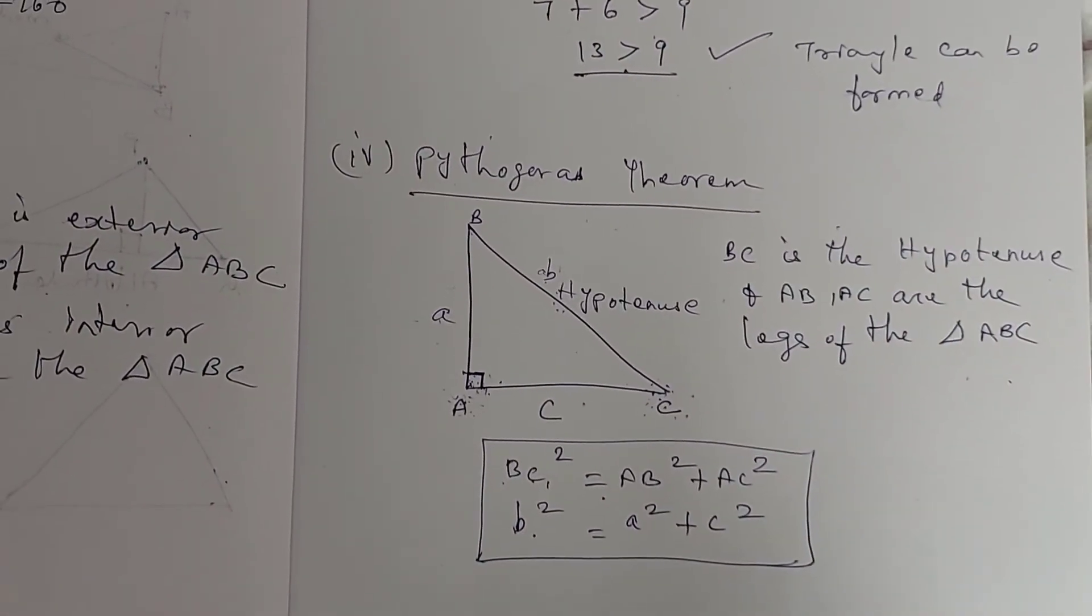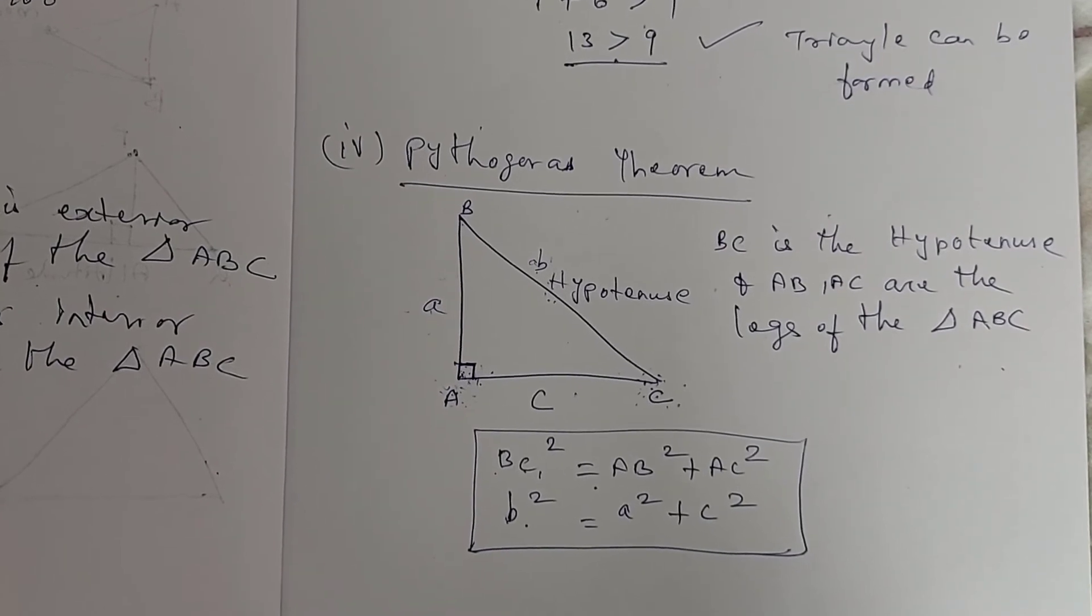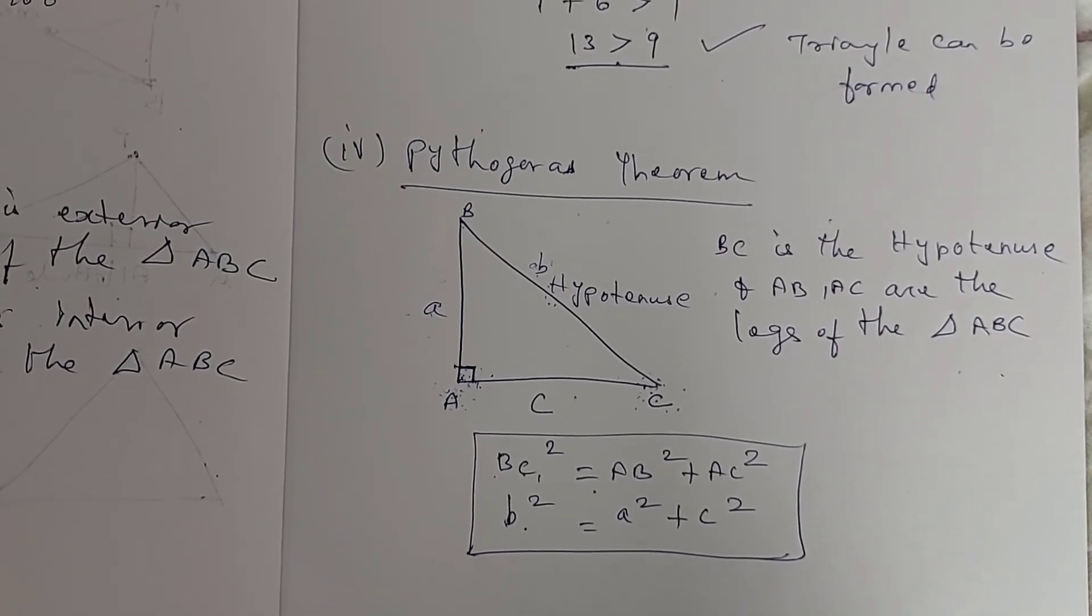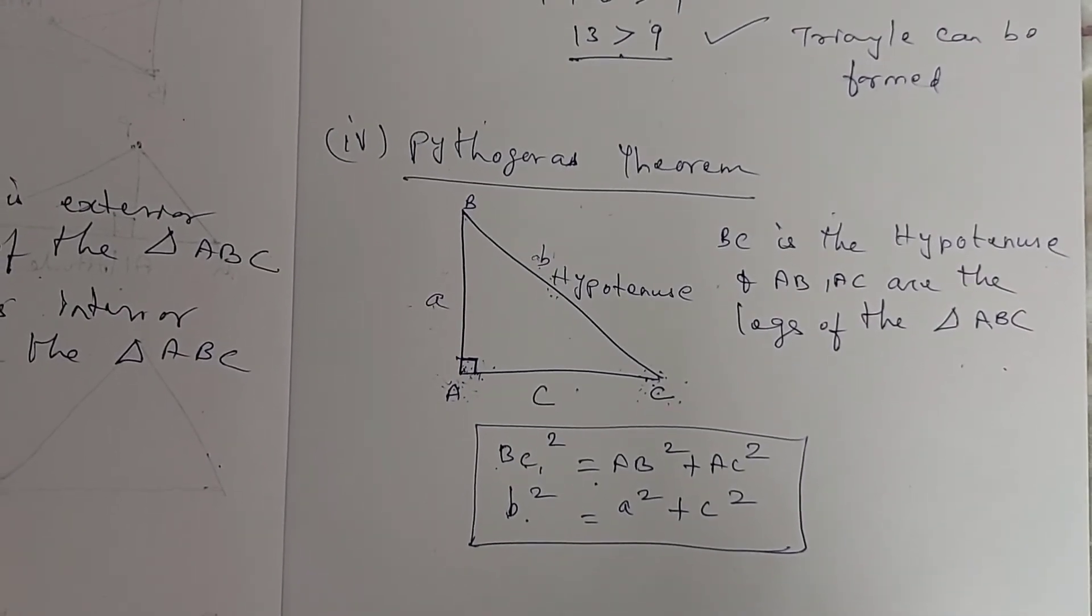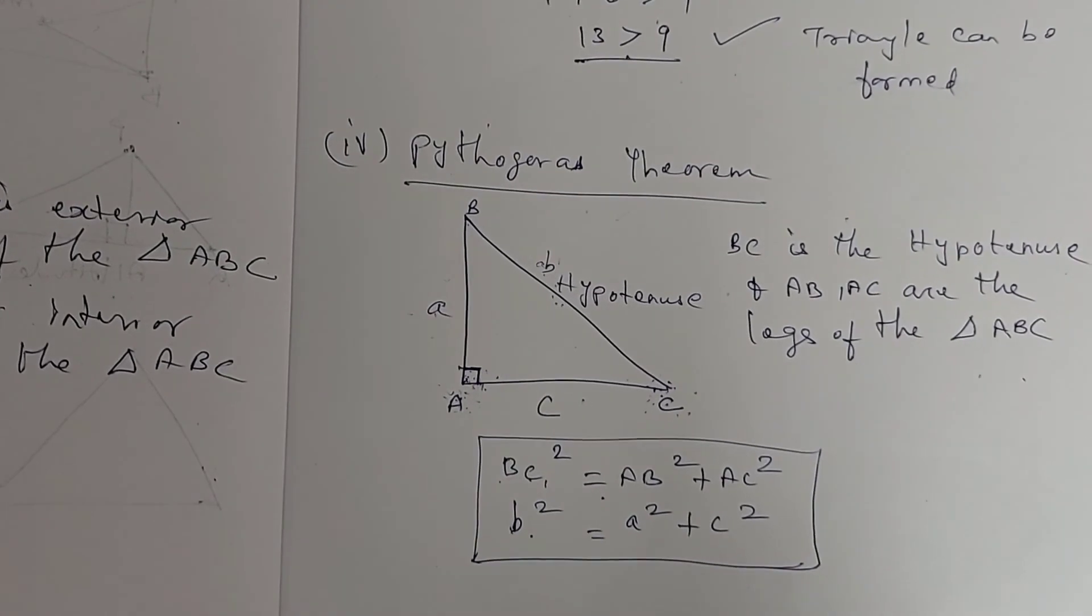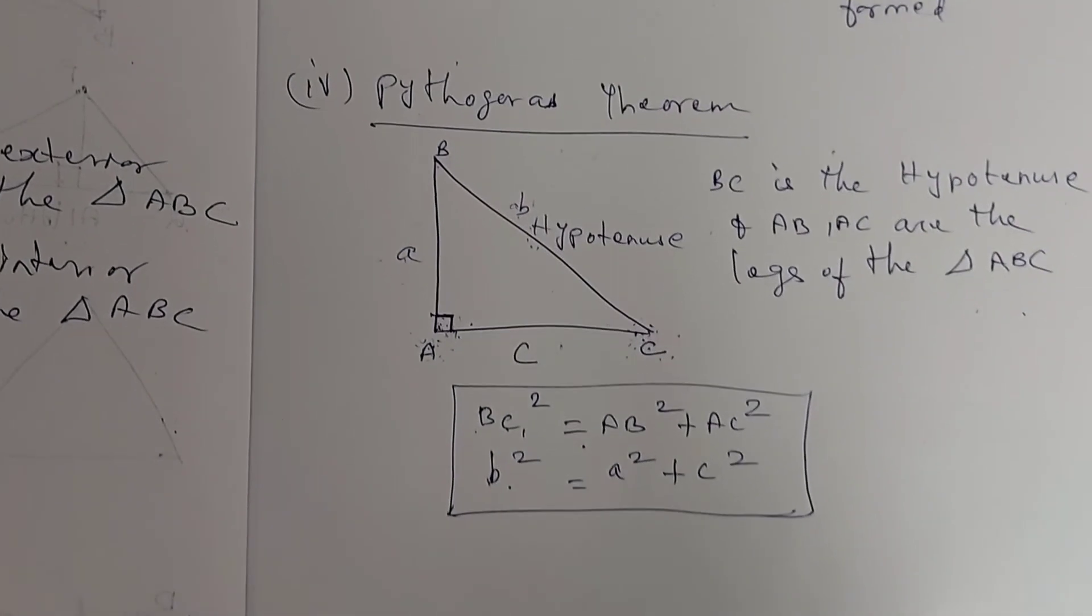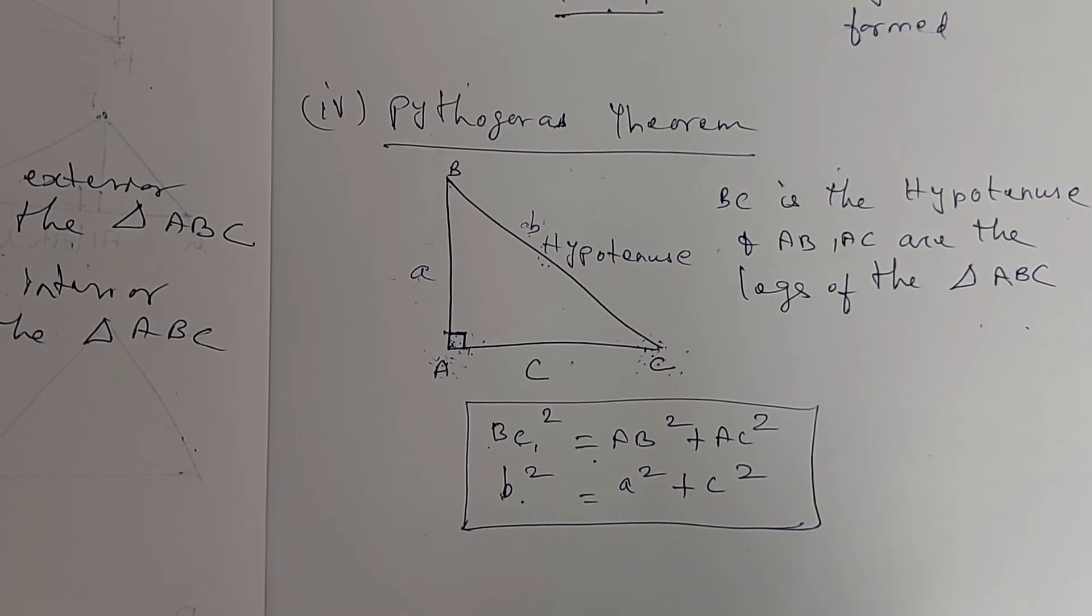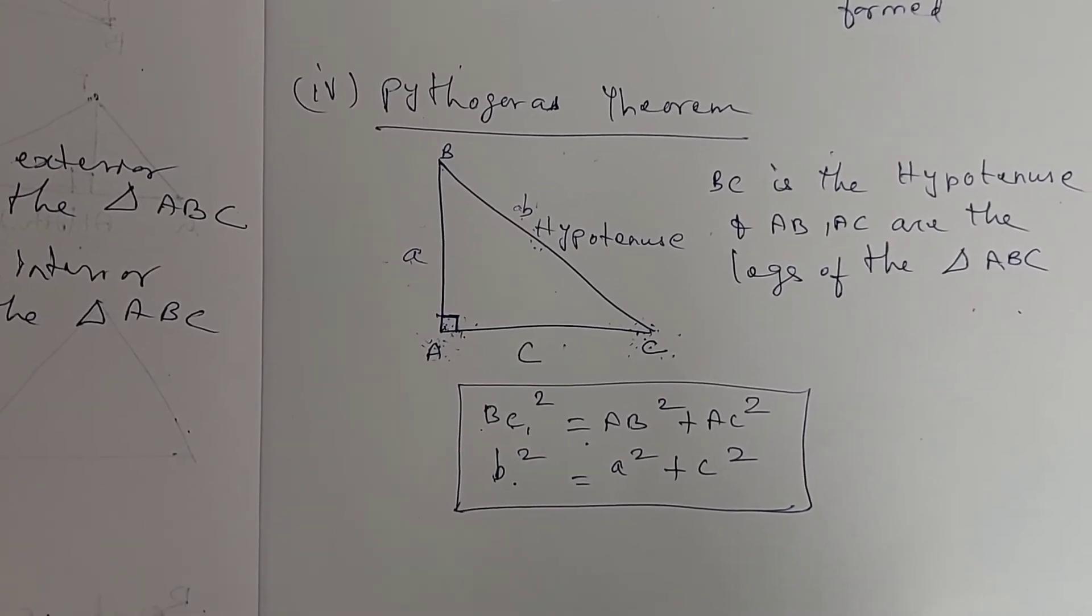So, in this chapter, in introduction session, we have seen four properties. What are the angle sum property, exterior angle property, triangle inequality property and finally the Pythagoras theorem, what we have seen today.